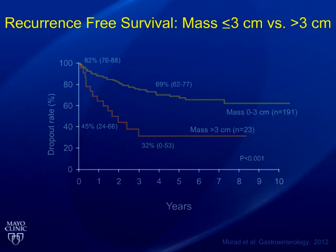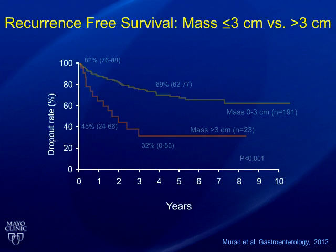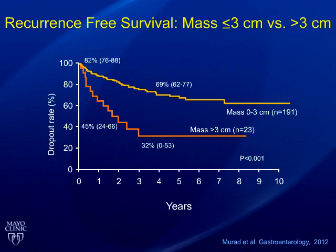Our approach has recently been verified by Sarah Murad and co-workers. She received a grant from the ASLD, visited all programs in the United States that had done transplantation for this disease, and extracted the data herself — visiting all programs who had done four or more cases. Looking at recurrence-free survival and the cutoff of mass less than 3 centimeters versus greater than 3 centimeters, the five-year survival was roughly 75–80% when the mass was less than 3 centimeters in radial diameter, and only about 30% when the mass was more than 3 centimeters. This cutoff works and has now been externally verified.